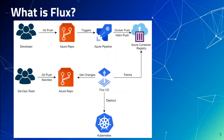Now, what is Flux? Flux is a Git-centric package manager for applications and a set of continuous delivery solutions for Kubernetes. Flux provides GitOps for both applications and infrastructure. You just have to push to the Git and Flux does the rest of the magic. Flux also has alerting and notification capabilities.